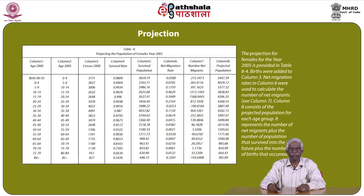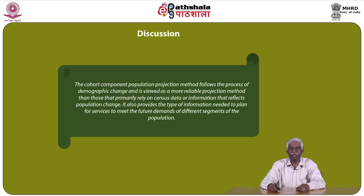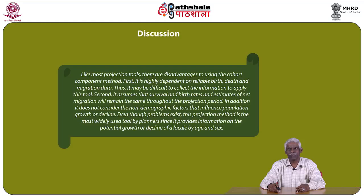The full projection for females for year 2005 is provided in table 8.4, with column 1 showing age in 2000, column 2 age in 2005, column 3 census 2000 data, column 4 survival rates, and results presented across various age groups. The cohort component population projection method follows the process of demographic change and is viewed as a more reliable projection method than those relying primarily on census data alone. It also provides the type of information needed to plan services to meet the future demands of different population segments.